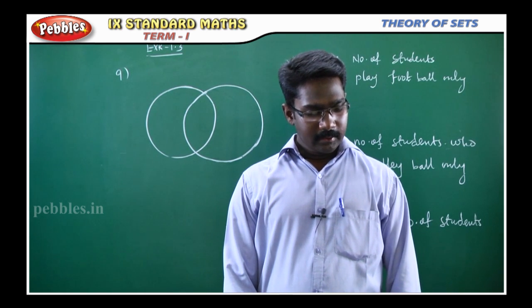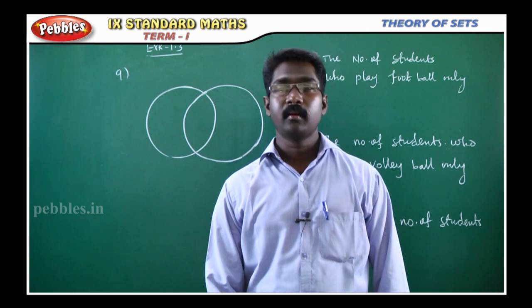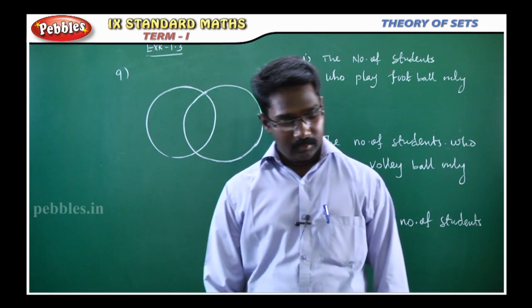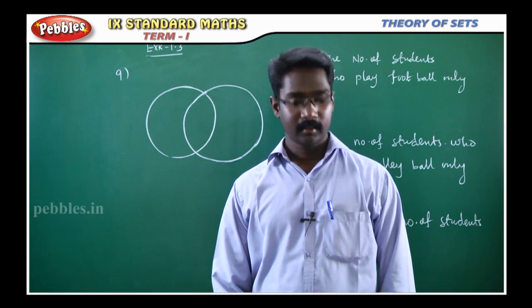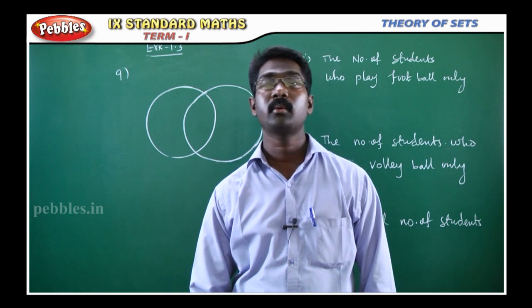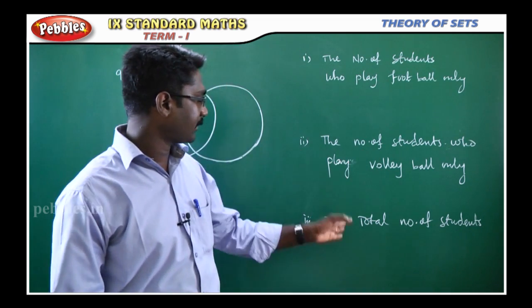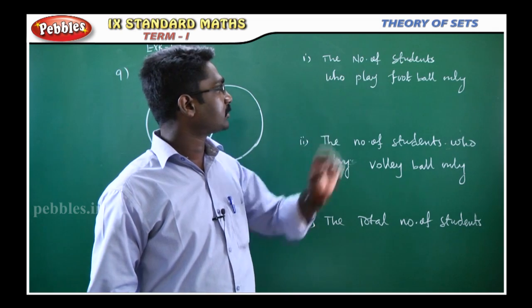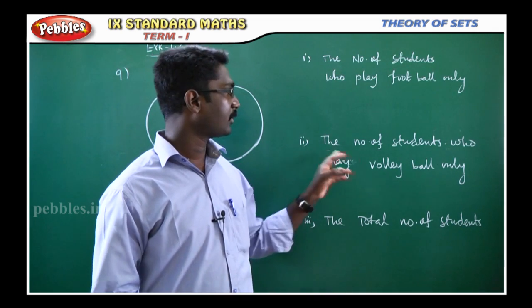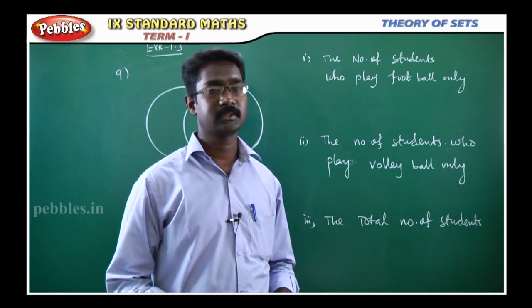Question number 9. In a school, all students play either football or volleyball or both. 300 students play football, 270 students play volleyball, and 120 students play both the games. Find the total number of students who play only football, the total number of students who play volleyball only, and the total number of students in the school.